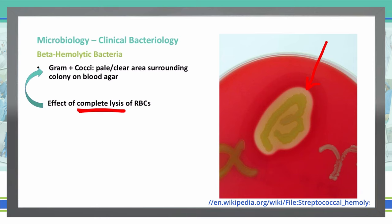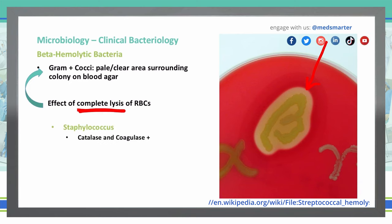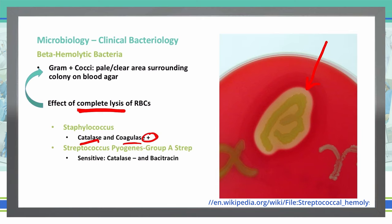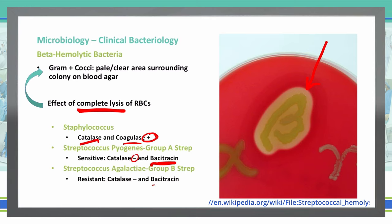There are several microorganisms that are beta hemolytic, and those include staphylococcus and streptococcus. The staphylococcus that are beta hemolytic are catalase and coagulase positive. For Streptococcus pyogenes, or group A strep, these are bacitracin sensitive but catalase negative. For Streptococcus agalactiae, or group B strep, these are resistant to bacitracin, and they are catalase negative as well.